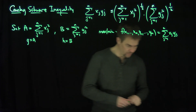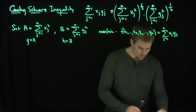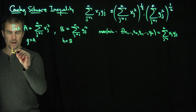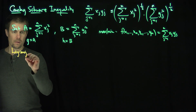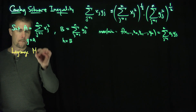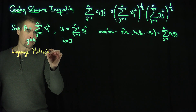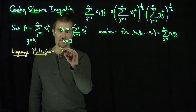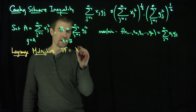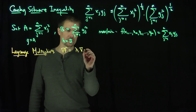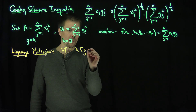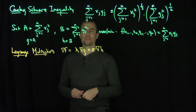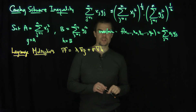So what does Lagrange multipliers tell us we can do? It says the gradients are proportional. By Lagrange multipliers, the gradient of f is equal to lambda times the gradient of your first constraint, plus another constant sigma times the gradient of your second constraint.